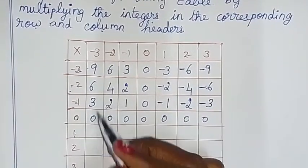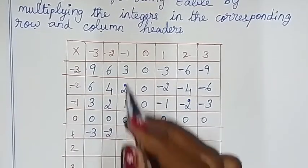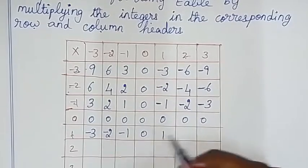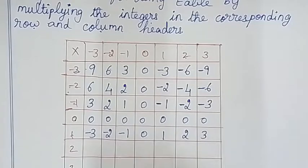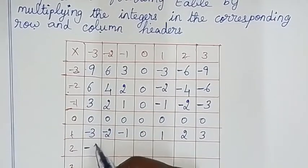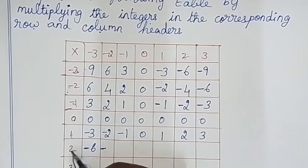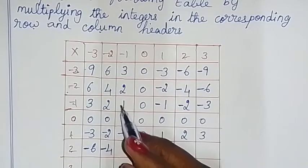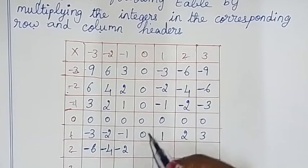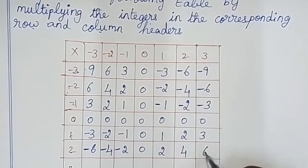1 into any number is the same number. 1 into minus 3 is minus 3. 1 into minus 2 is minus 2. 1 into minus 1 is minus 1. 1 into 0 is 0. 1 one's are 1, 1 two's are 2, 1 three's are 3. 2 into minus 3: so minus, one minus number, multiply 3, 2's are 6. 2 into minus 2: one minus number, multiply 2, 2's are 4. One minus answer, so minus answer, 2 one's are 2. 2 into 0 is 0. 2 into 1 is 2. 2 two's are 4, 2 three's are 6.